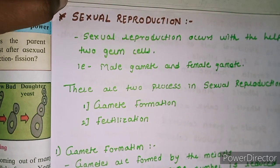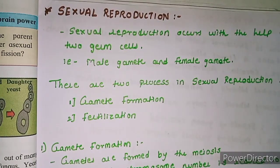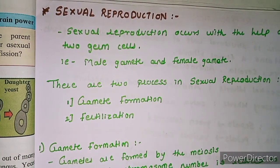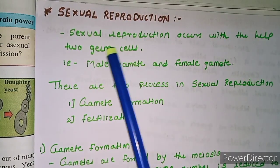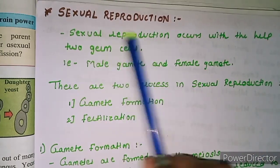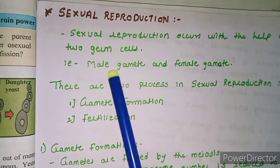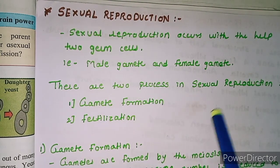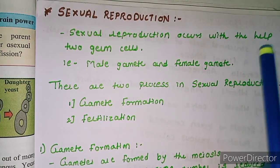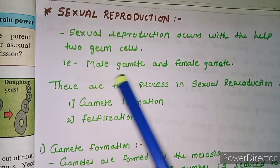In sexual reproduction, two germ cells are involved — that is the opposite of asexual reproduction, where only one parent cell was involved. In sexual reproduction, two germ cells means male gametes and female gametes; two parent cells are involved. There are two processes in sexual reproduction.